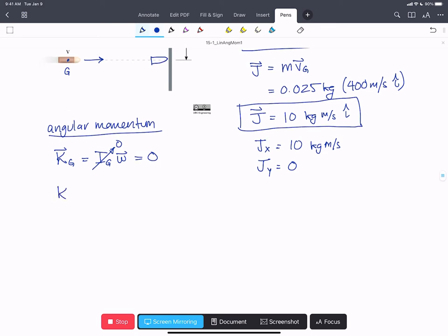That's going to be the expression KO equals IG omega. We already know that that's 0. Plus our G with respect to O crossed with MVG of the bullet. And that expression is in fact our linear momentum.